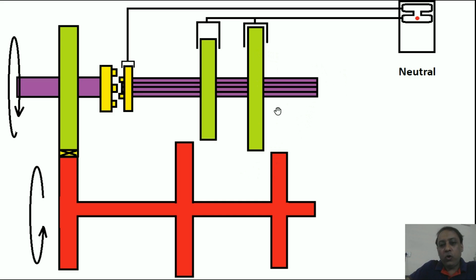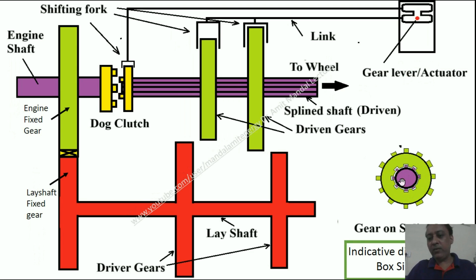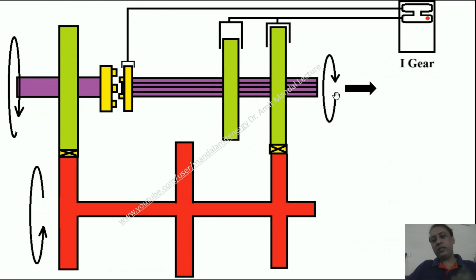Right now no power is coming to this spline shaft — it is in neutral. If we shift the gears toward the right, the gear is shifted, and this driver gear of the lay shaft meshes with this driven gear. It will start spinning the driven gear, and in turn will start spinning the spline shaft also. You can see that the driver gear of the lay shaft is of smaller size compared to this driven gear, so high torque will be obtained, however omega will be reduced.